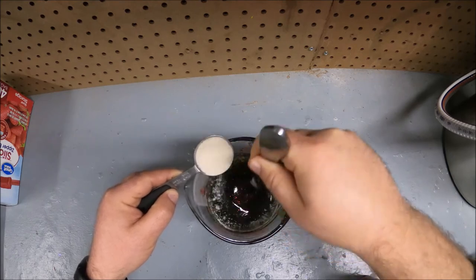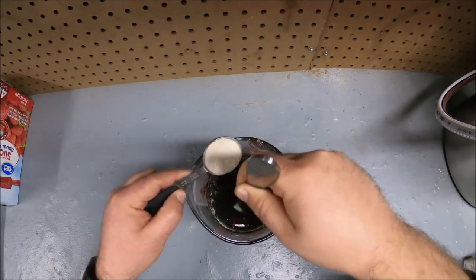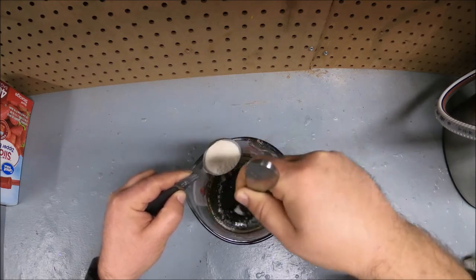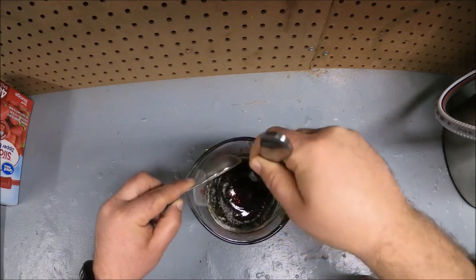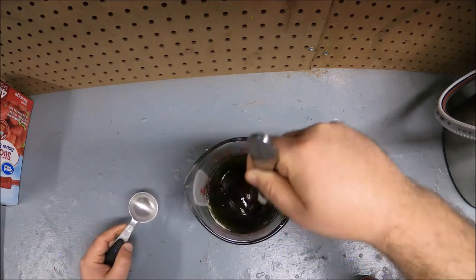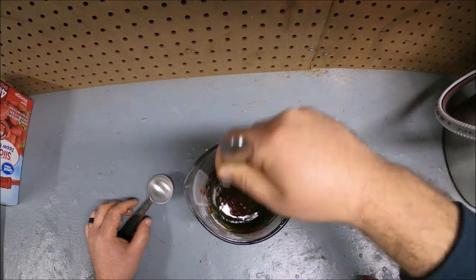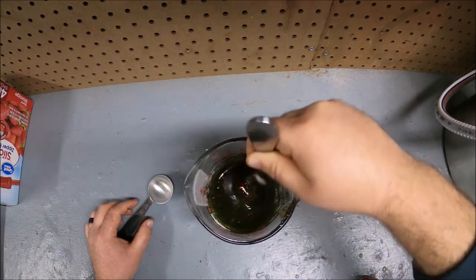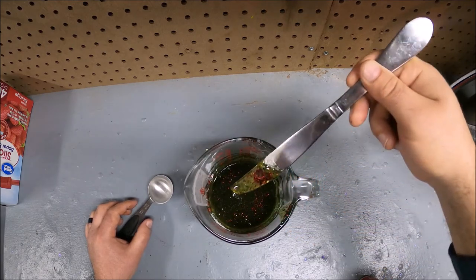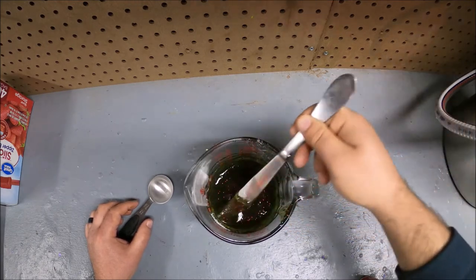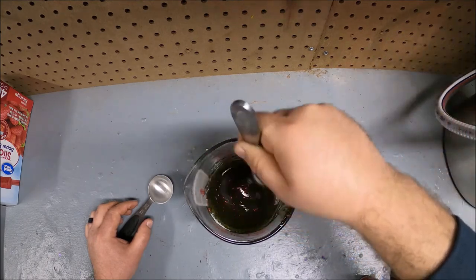You always want to add your salt slowly so that it doesn't clump up. It'll all settle at the bottom if you just dump it all in there. There we go. Get that all stirred in there. Alright, that actually mixed in there pretty well. So probably need to heat this up, and then we'll shoot our first bait.